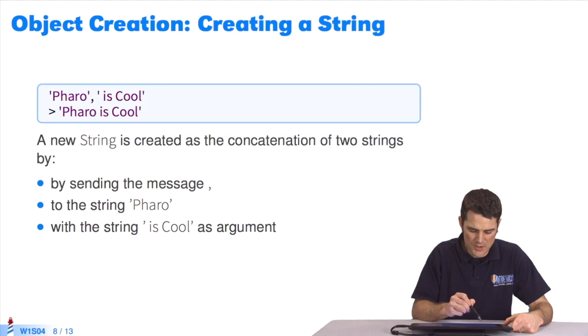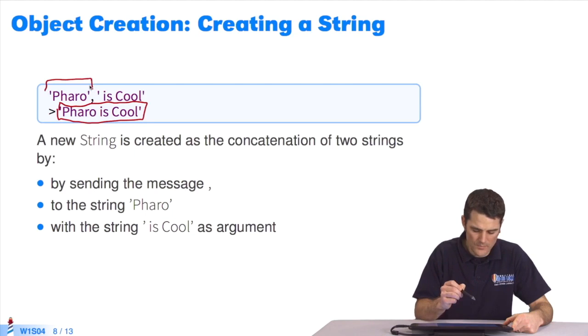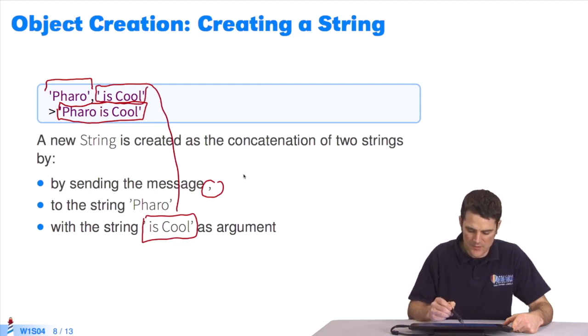Here's another example. I want to create a string of characters like this one here. How is this string obtained? We've used a first chain here, Pharo. We've sent it to the message comma. As argument, we have the string 'is cool,' which is here, right? The meaning of the message comma is the concatenation of strings. The two strings are glued together to produce a single string.